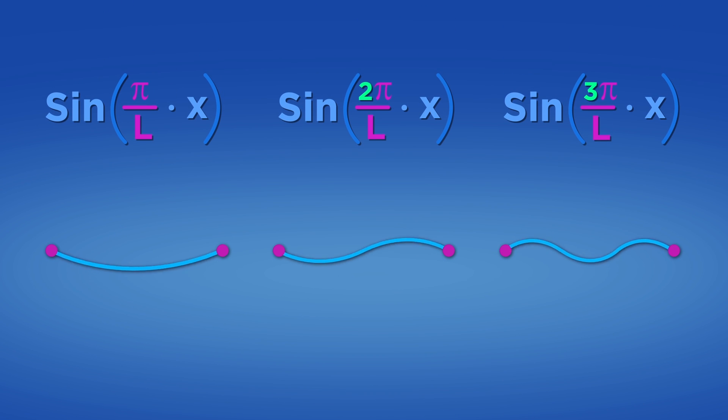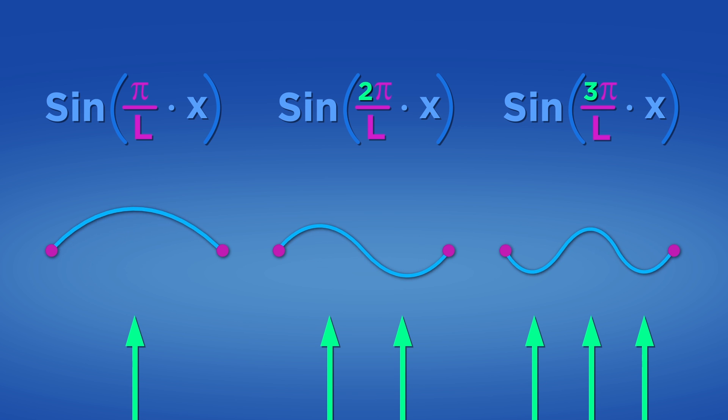In these equations, the variable x tells us what point we're at along the string. The number in front of the x is related to the frequency. It tells us how many bumps there are on a string of length L. To determine the frequency, we divide it by 2 pi. So the frequency of these sine waves is 1 over 2L, 1 over L, 3 over 2L, and so on.